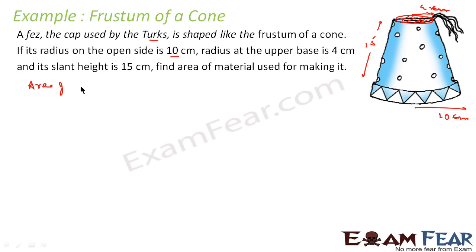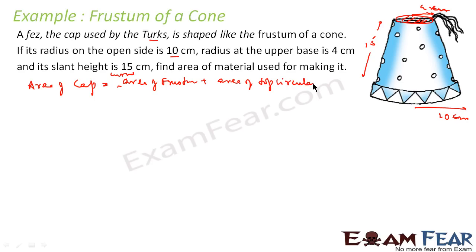The area of the cap is the curved surface area of the frustum plus the area of the top circular surface. The bottom is open (hollow), so we do not include the bottom base area — no material is needed there. But the top is covered, so we include the top circular area as well.